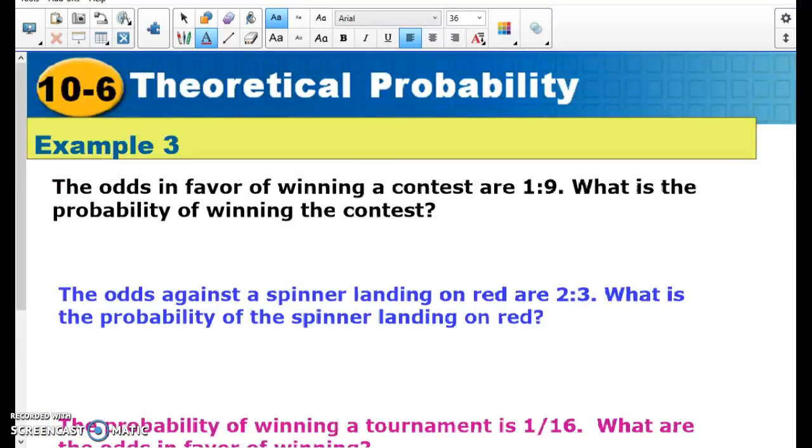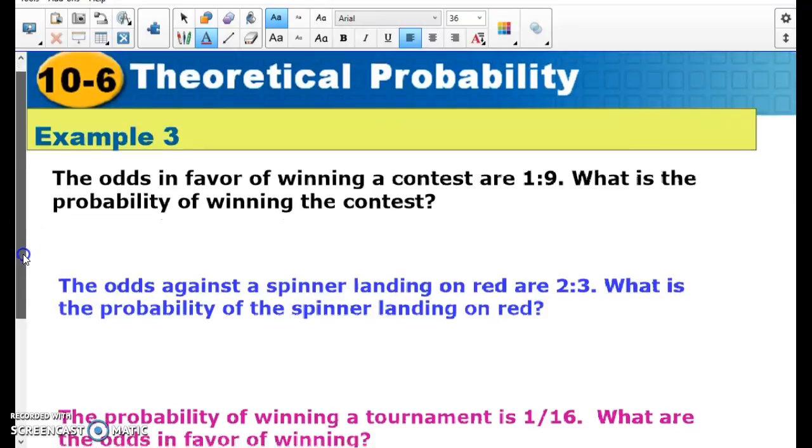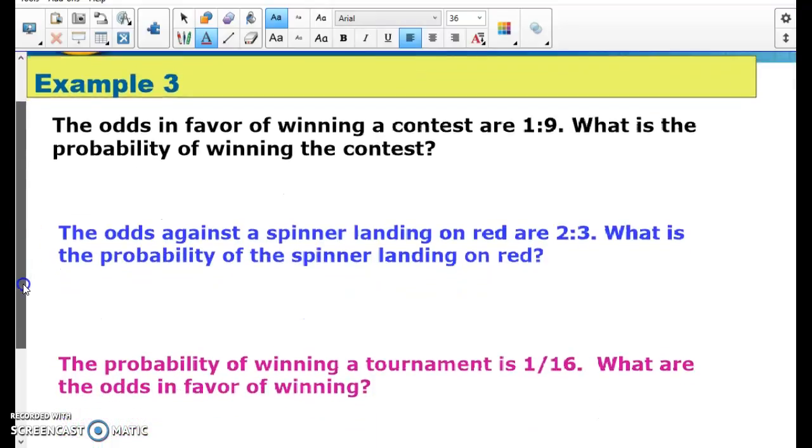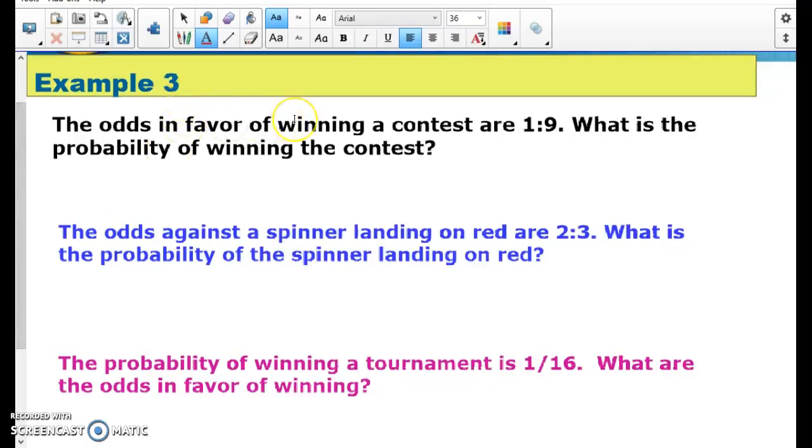And then the last thing I want to talk about is odds. So when we're doing something like this, remember the odds in favor of winning a contest are 1:9. That means for every one time I win, I'm going to lose nine times. So that means my probability of winning is 1 out of 10. I have to add up those two numbers in order to get my probability.